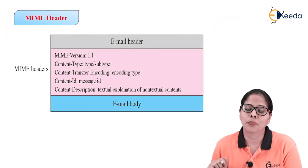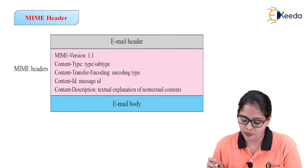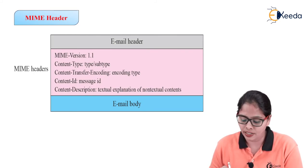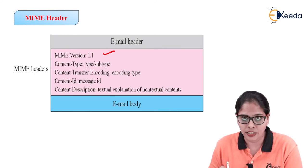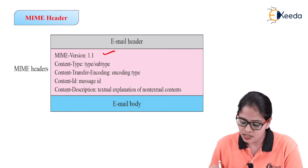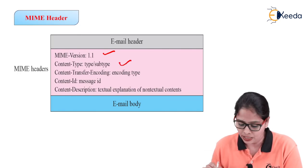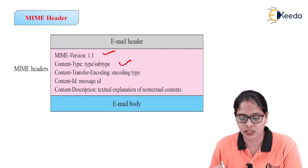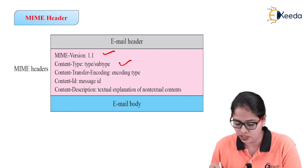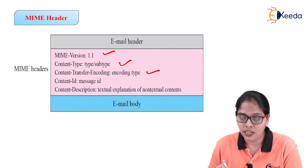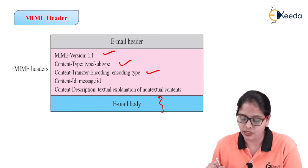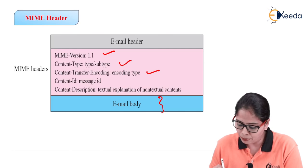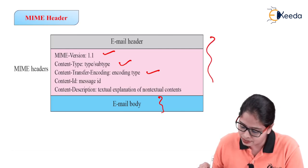Now let us discuss the MIME header. The header contains: first, the MIME version — the current version is 1.1; second, the content type; third, content transfer encoding; fourth, content ID; fifth, content description; and then the email body. In the email body, this header is added.